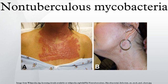Non-tuberculous mycobacteria, also known as environmental mycobacteria, atypical mycobacteria, and mycobacteria other than tuberculosis, are mycobacteria which do not cause tuberculosis or Hansen's disease.